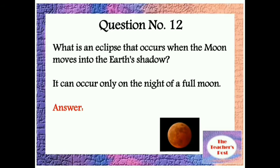Question number 12: What is an eclipse that occurs when the moon moves into the Earth's shadow? It can occur only on the night of a full moon.